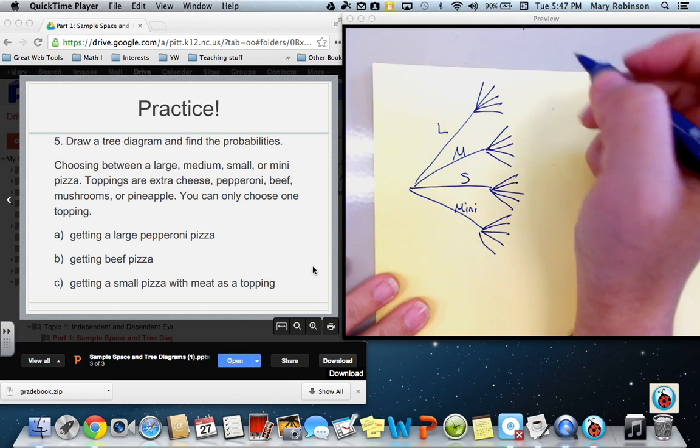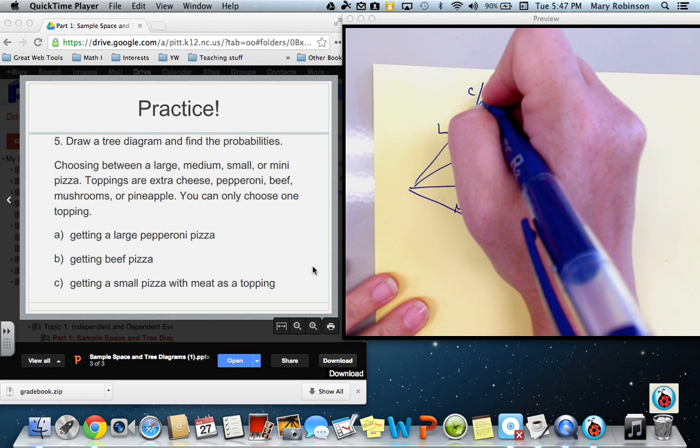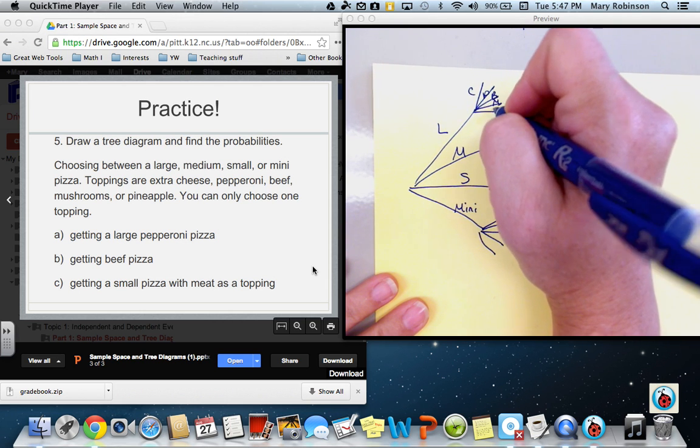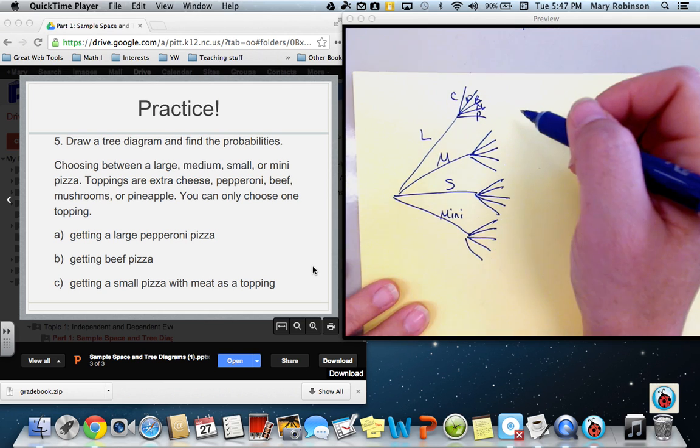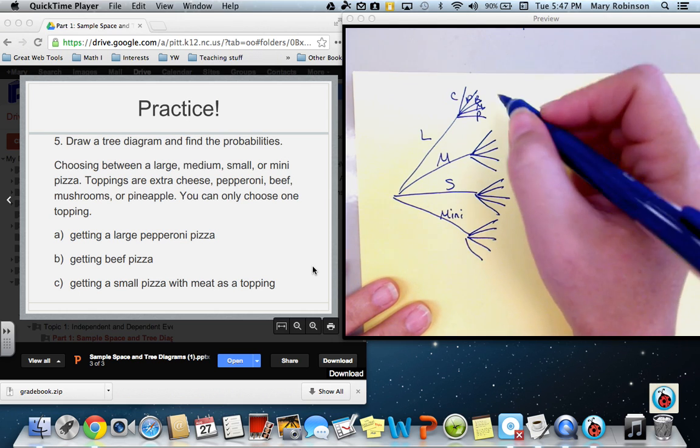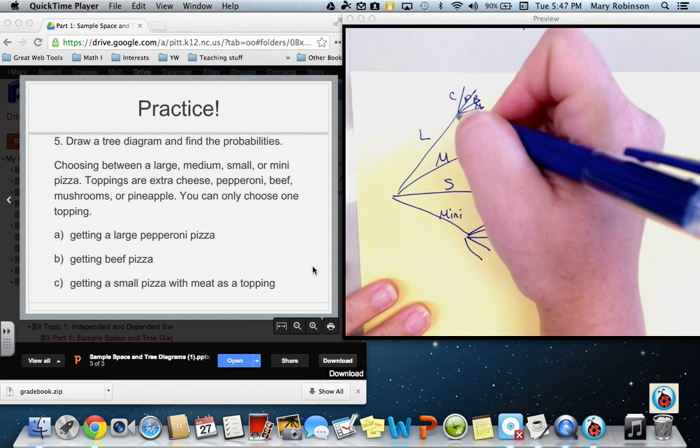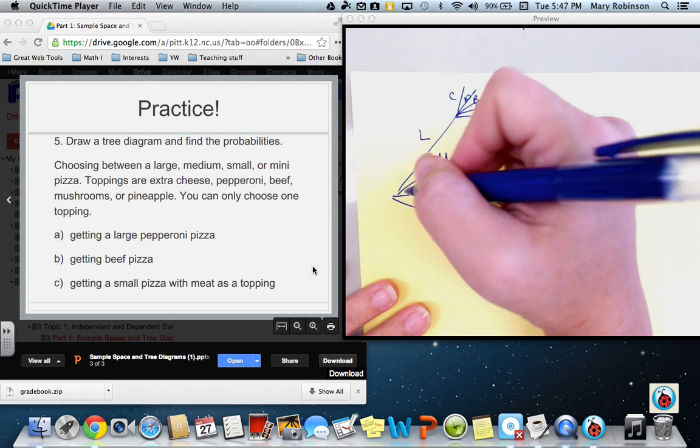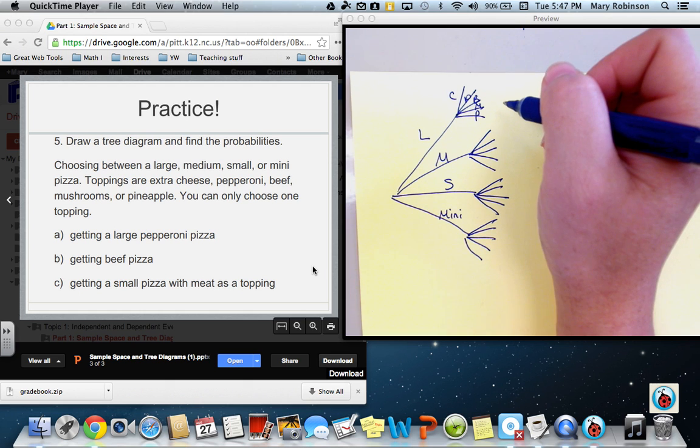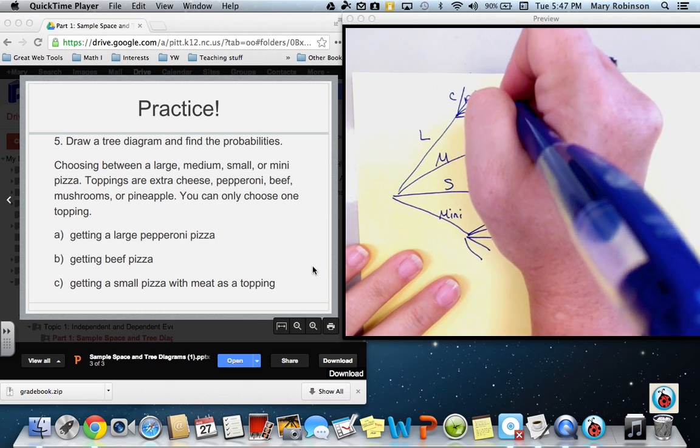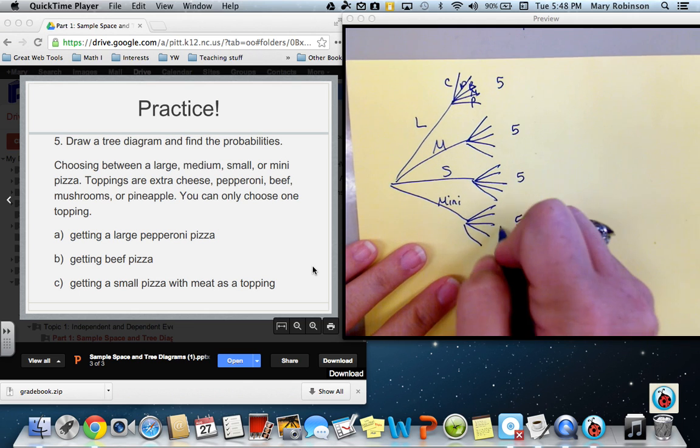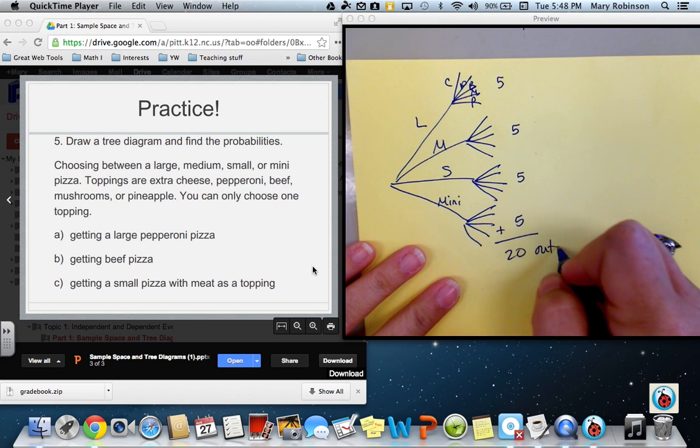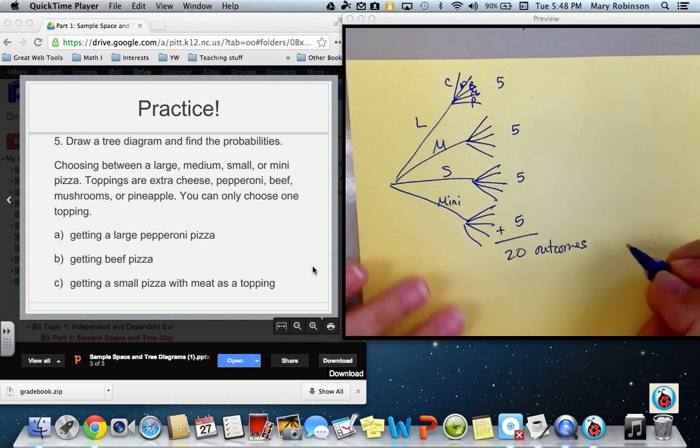All right, so if we label these extra cheese, pepperoni, beef, mushrooms, or pineapple, and I'm not going to copy that for each one at this time, then we would list those and then determine how many possible outcomes we have. So, again, we could get large with extra cheese, large with pepperoni, large with beef, large with mushrooms, or large with pineapple. So that's five possibilities for large. Therefore, we would have five here and five here, giving us a possible 20 outcomes or 20 different types of pizza.